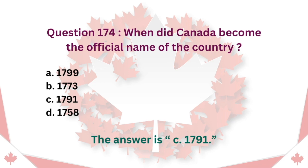Question 174: When did Canada become the official name of the country? A. 1799. B. 1773. C. 1791. D. 1758. The answer is C. 1791.